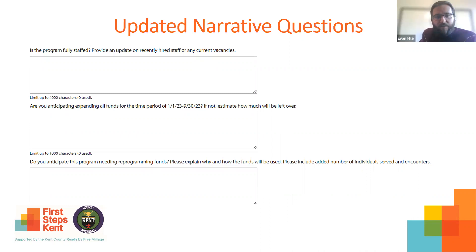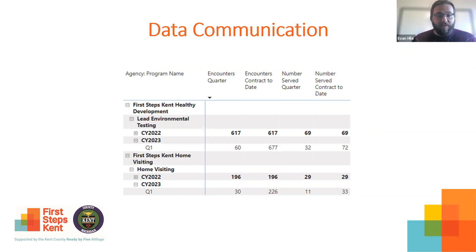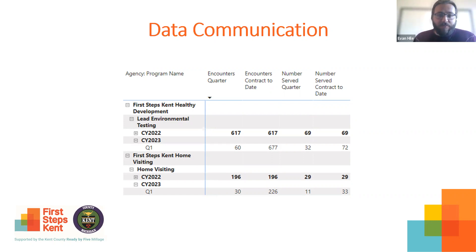We're going to talk about a little bit of communication we've been putting together to promote shared understanding of where the data is in terms of progress for your program, and to make sure you have something to respond to when looking at the numbers narrative and context — including monthly data submissions, your program's total collection, and contract performance. On the 20th of the month after the end of the quarter — for example, for Q1 of 2023 that would be April 20th — we will be sending all service providers a data table like the ones you can see on the slide here.